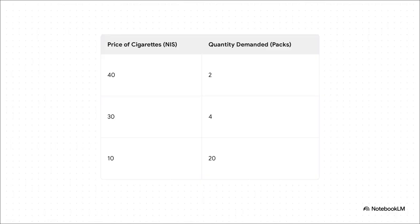Let's use a really simple example to see how this works. Just look at this table here. The relationship is super intuitive: the more something costs, the less of it people want to buy. So if something is priced at $40, you might only buy two of them. But if that price plummets to $10, suddenly you might grab 20. This simple chart that lays out prices and how much people want at those prices is what economists call a demand schedule.